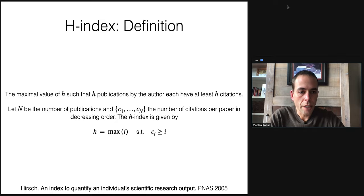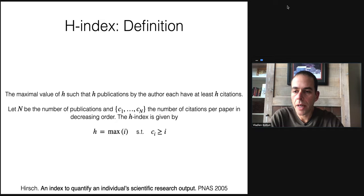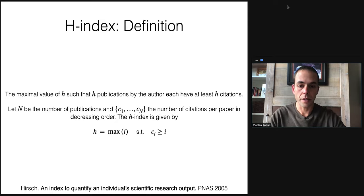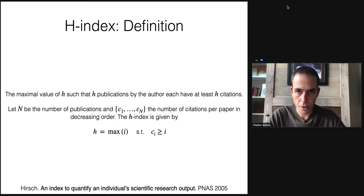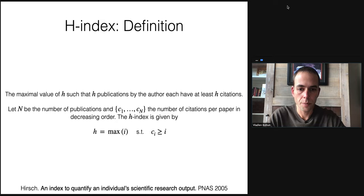Let's begin with a refresher — the definition of the H-index. The H-index is the maximum value of H such that H publications by the researcher have at least H citations each. So if 10 of your publications have 10 or more citations each, and the others have 9 or fewer citations each, then your H-index is 10. That's it. Super simple.